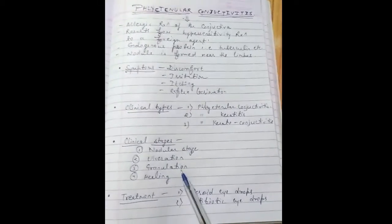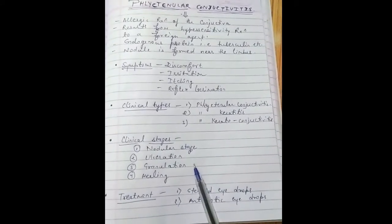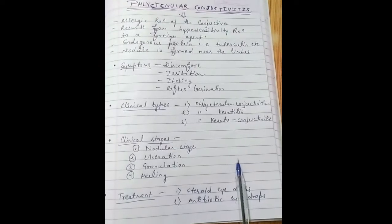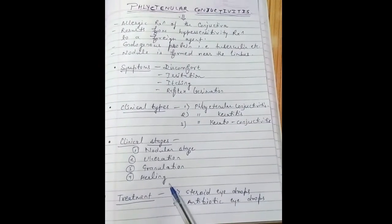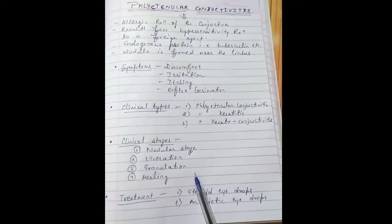Third is the granulation - in granulation, the floor of the ulcer becomes covered by granulation tissue. Fourth is the healing - healing occurs with minimal scarring.